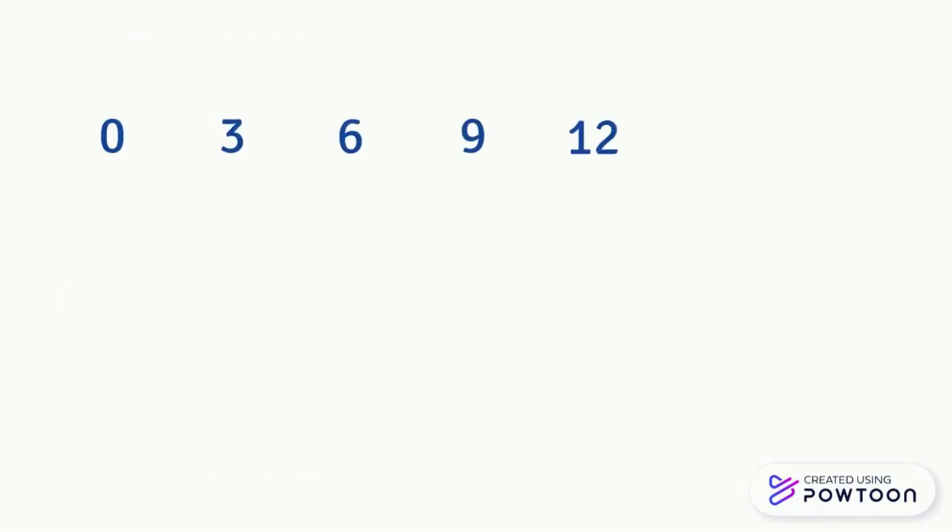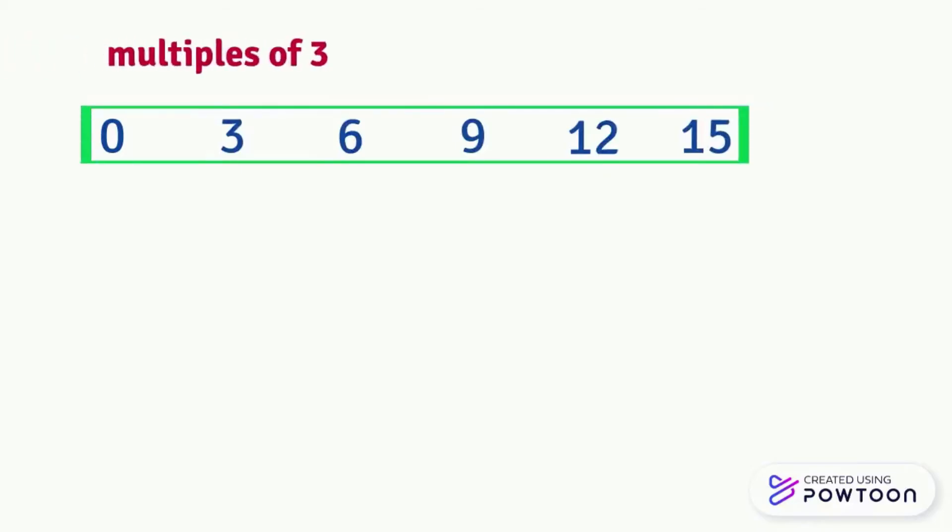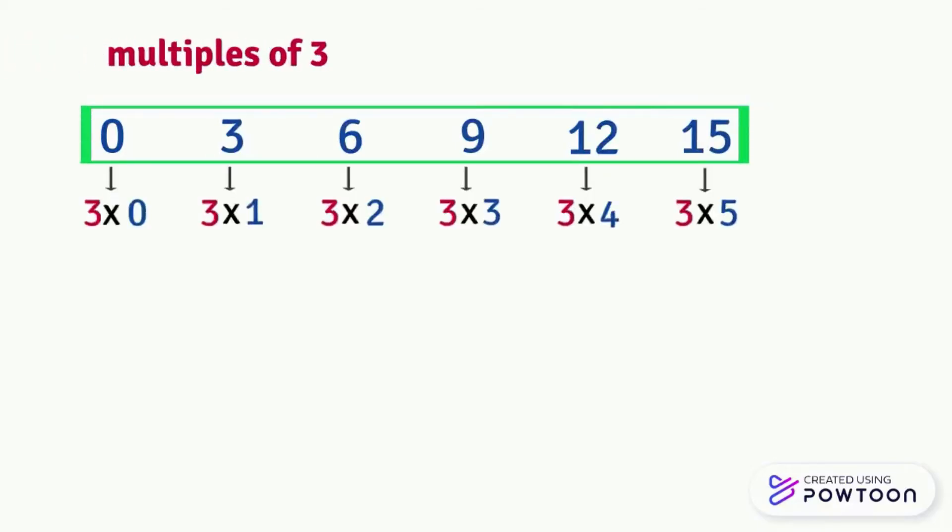So the numbers 0, 3, 6, 9, 12, 15, etc. are multiples of 3 because we multiplied by 3 to get them.